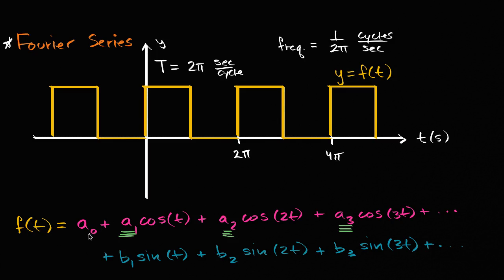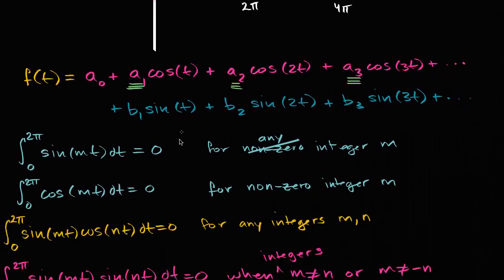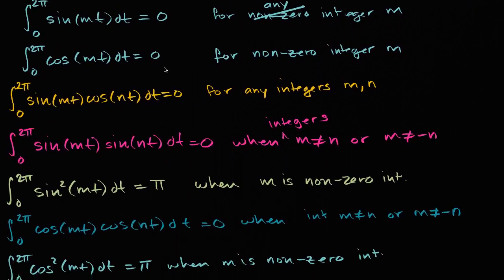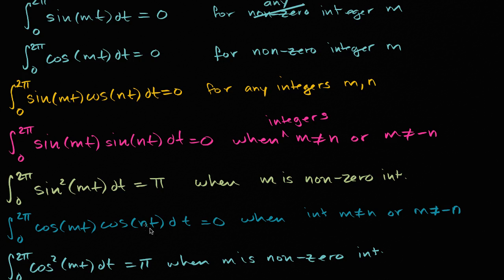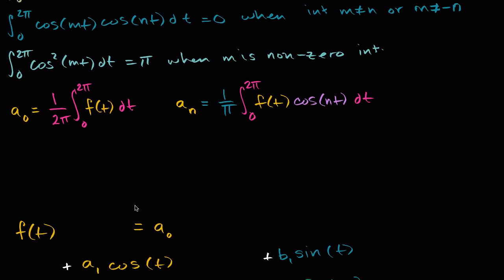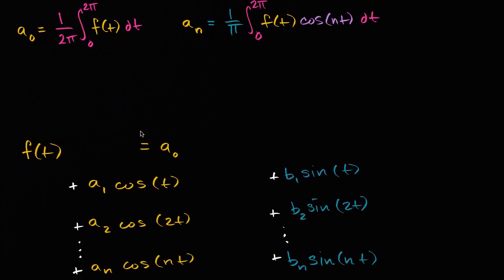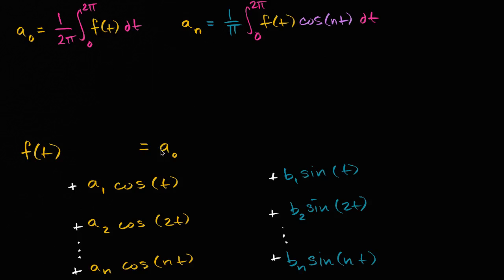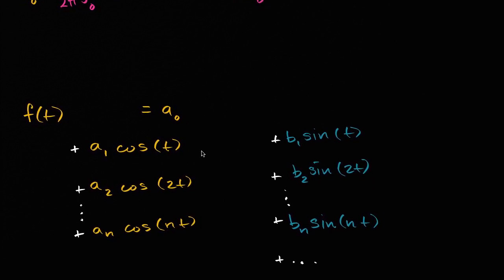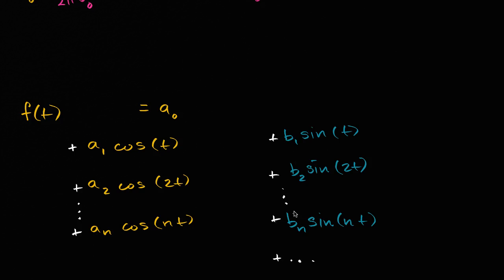Many videos ago, we first looked at the idea of representing a periodic function as a set of weighted cosines and sines — as an infinite sum of weighted cosines and sines. We did some work to get basics on these integrals, which we used to derive formulas for the various coefficients. We've figured out a formula for a sub zero and a sub n. Now let's figure out the coefficients on the sines.